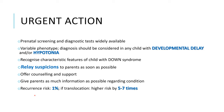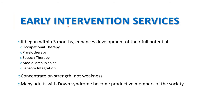A common question parents ask is: if one child has Down syndrome, what is the recurrence risk for the next child? If the Down syndrome is due to trisomy 21, the recurrence risk is 1%. But if Robertsonian translocation is present, as in 4% of cases, the risk increases five to seven times — about 5–7%. We must refer the child to early intervention services, because if begun within three months, these services enhance development of their full potential. These include occupational therapy, physiotherapy, speech therapy, medial arch insoles, and sensory integration therapy. Focus on strengths, not weaknesses — many adults with Down syndrome become productive members of society.